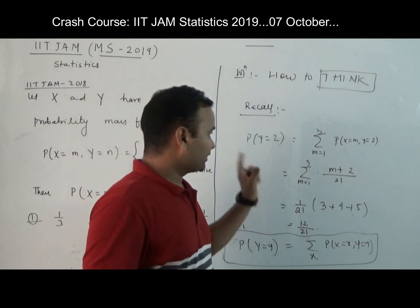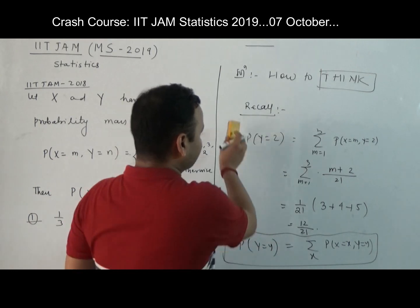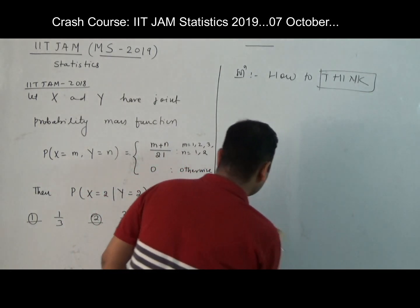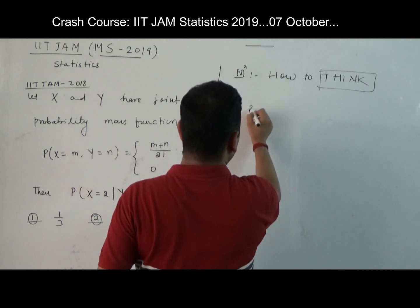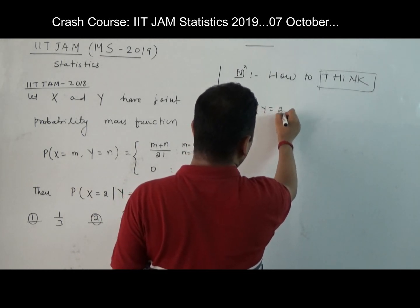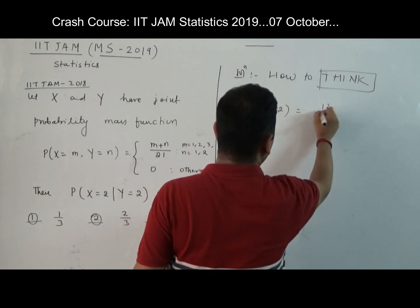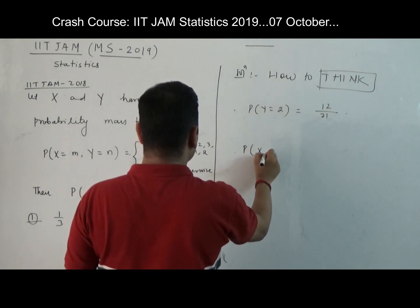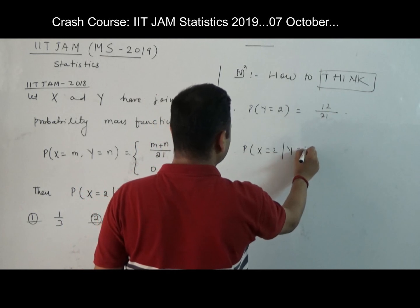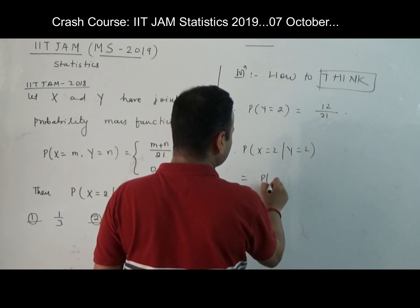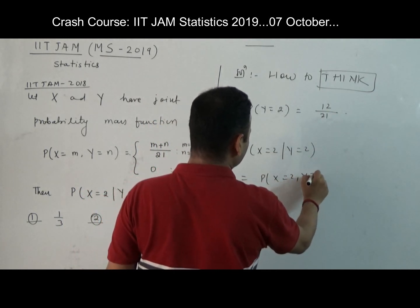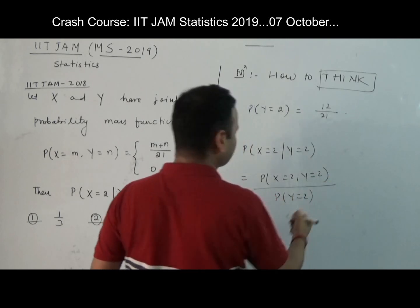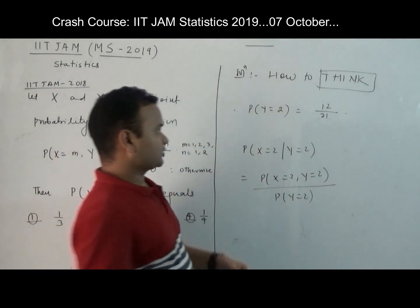This is the way to define marginal when joint probability mass functions are given. Now I am going to use this. What we have calculated so far: we have calculated the probability of Y equal to 2 is 12 by 21. Now you are asking about probability of X equal to 2 given Y equal to 2. So what is the definition? This is probability of X equal to 2 and Y equal to 2 divided by probability of Y equal to 2.